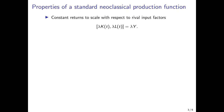Intuitively, if lambda equals 2, it means I build the same firm again on the other side of the street, and I can produce twice the output. So if I double the rival inputs in production, I can also double output.